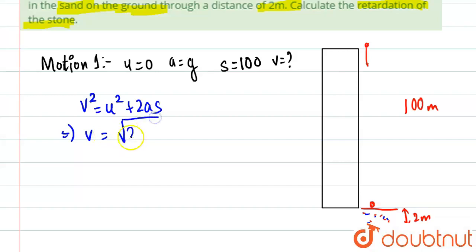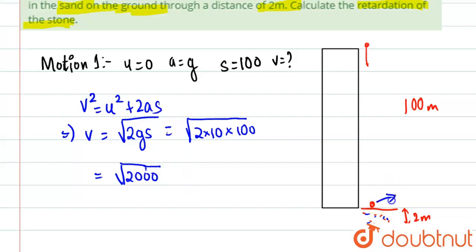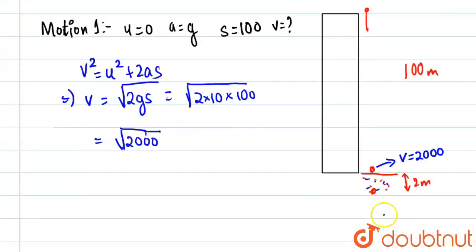So v equals the square root of 2 × g × s, which is the square root of 2 × 10 × 100, giving us the square root of 2000. We will leave it as √2000 for now. So the velocity at the bottom of the tower is √2000 m/s. Now we will use the equation of motion for motion number two.